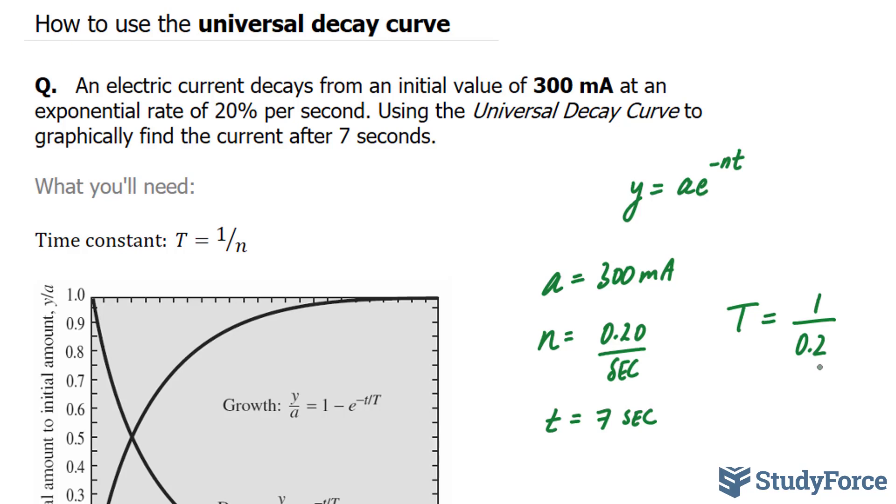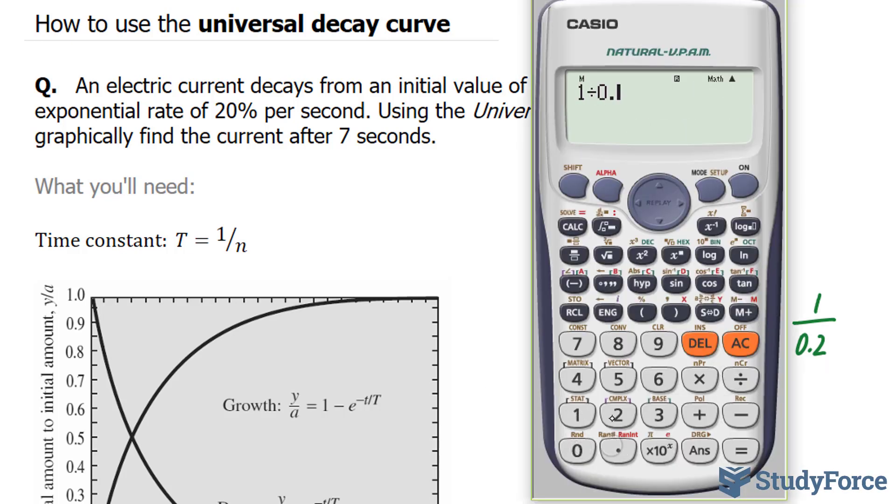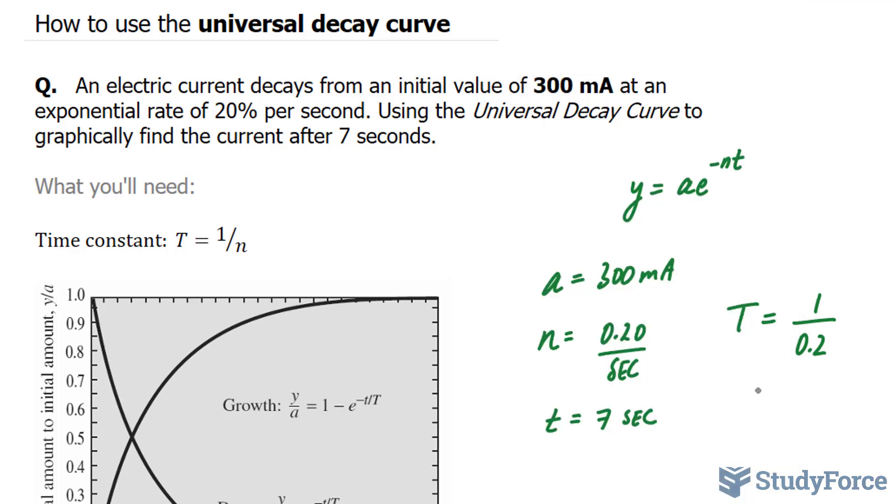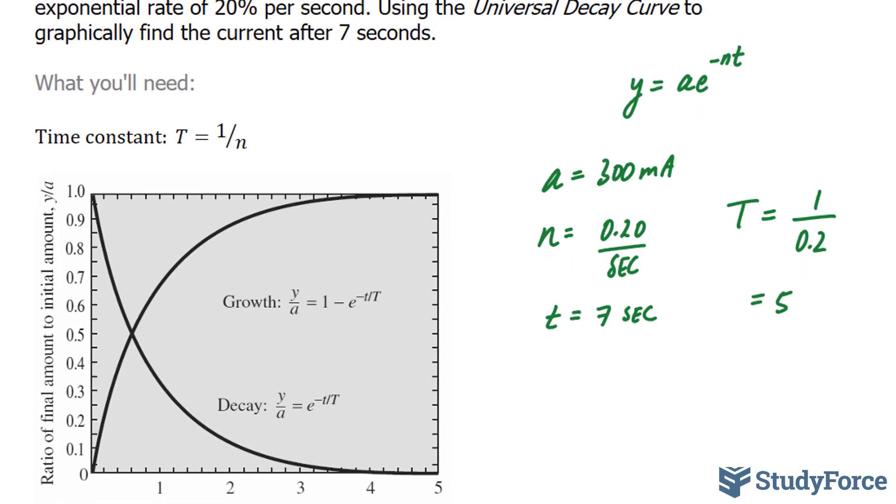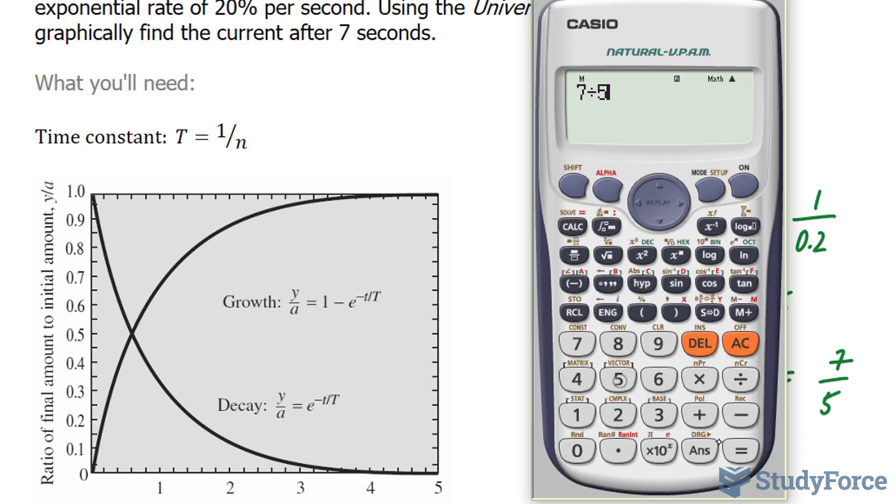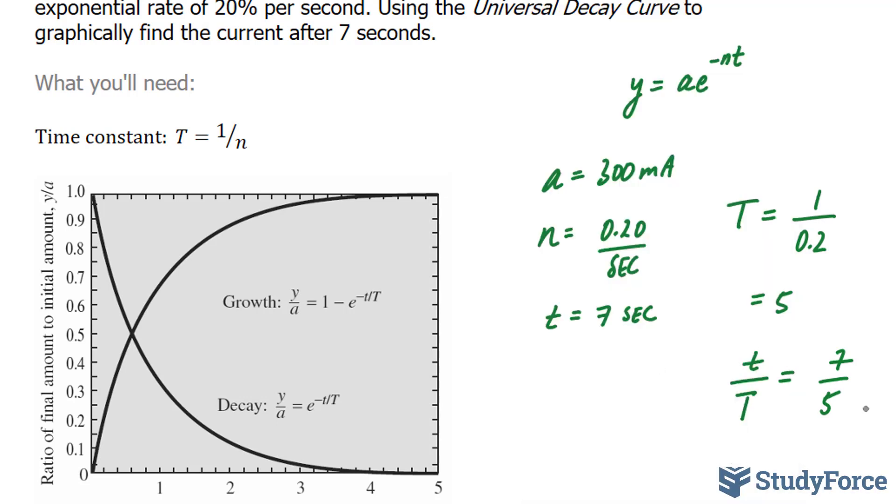And then we're going to take this number and compare it to the time, which will give us the number of time constants. Let me show you what I mean. Let's start off by finding out what 1 over 0.2 is equal to. And that is equal to 5. And like I said, I'm going to take this number now and compare it to the time, where I have little t over big T is equal to 7 over 5. And using my calculator, that gives me 1.4.